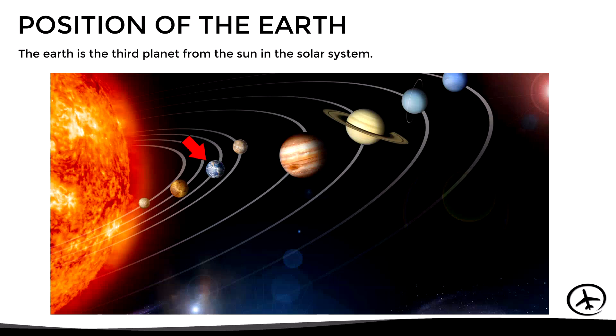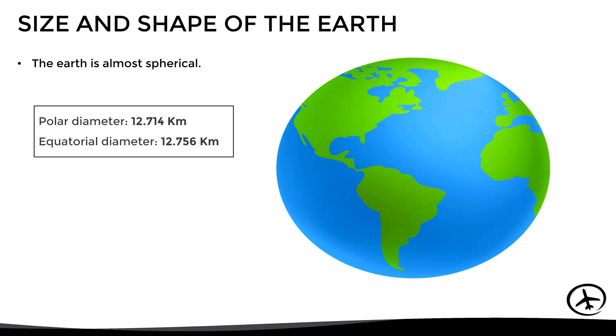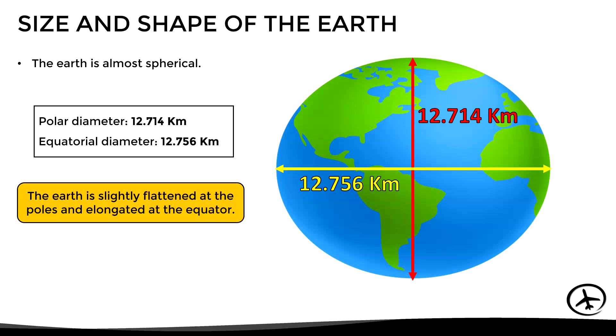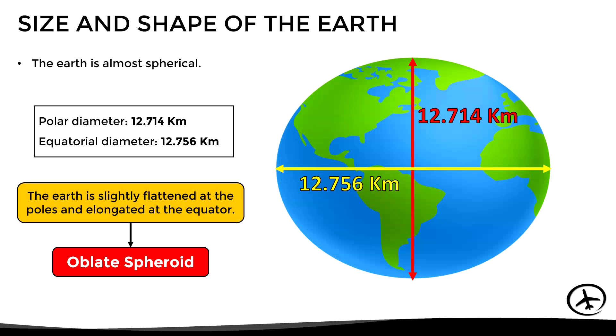The earth is the third planet from the sun in the solar system, and its shape is almost spherical since it has a polar diameter of 12,714 kilometers and an equatorial diameter of 12,756 kilometers. The earth is slightly flattened at the poles and elongated at the equator, which gives it an oval shape known as an oblate spheroid.